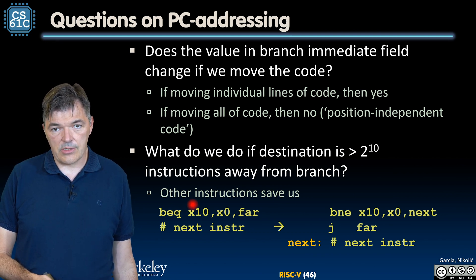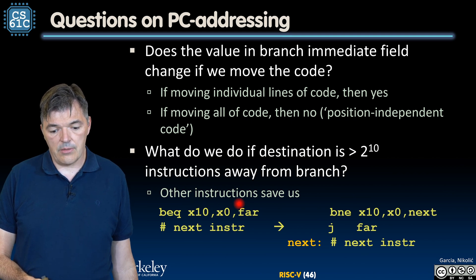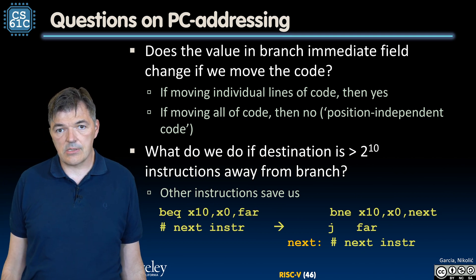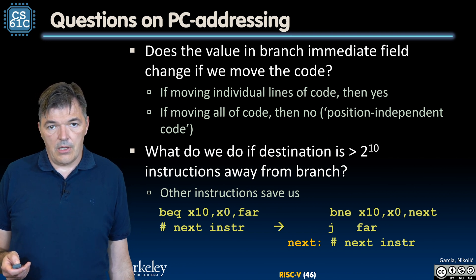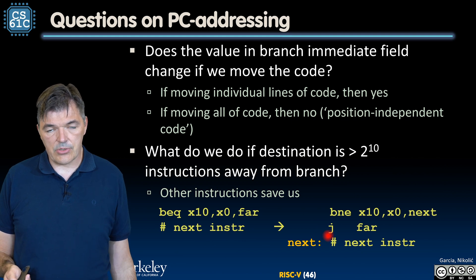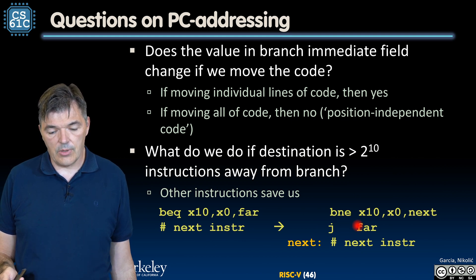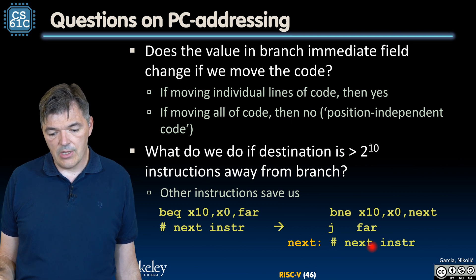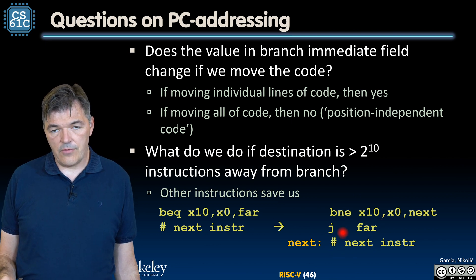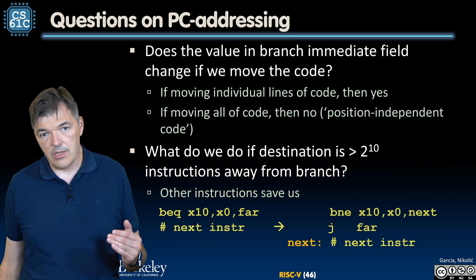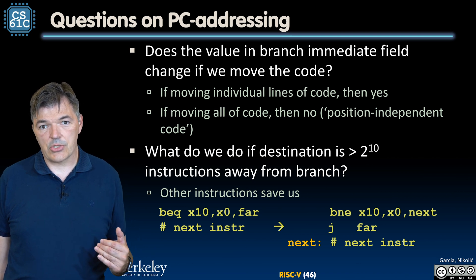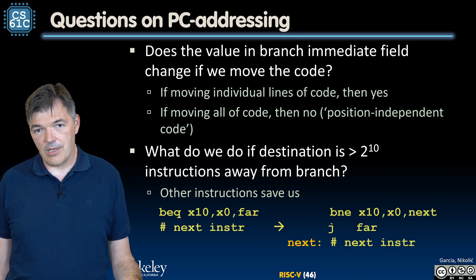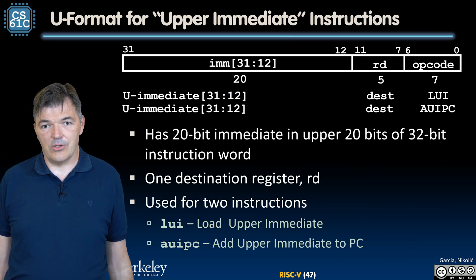This instruction compares the value in register x10 with 0 and branches to a far location if x10 equals 0; if not equal to 0, it executes the next instruction in sequence. The way we handle this is to flip the branch condition: branch-if-not-equal when x10 is not 0 to the next instruction. In between, if x10 is actually equal to 0, we put a jump, because the jump will have a much longer reach than our branches. That is the consequence of the upcoming section about long immediates.